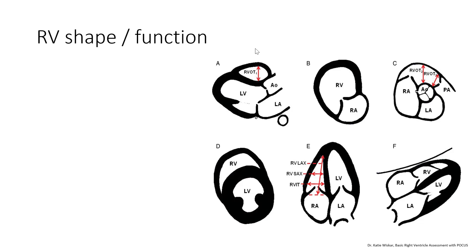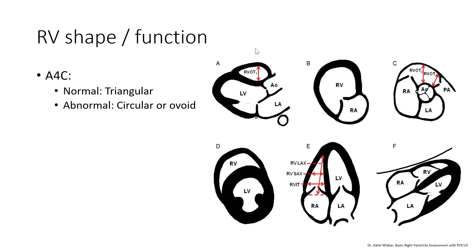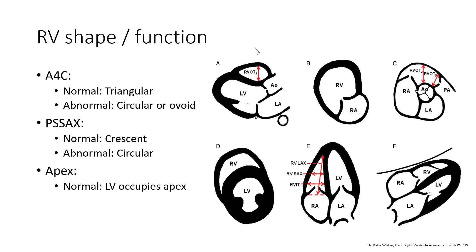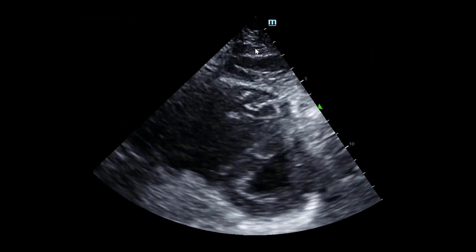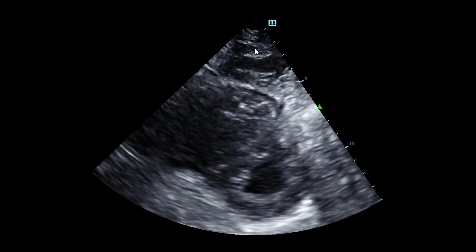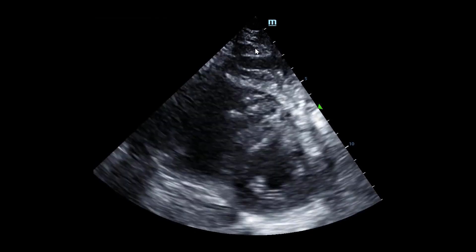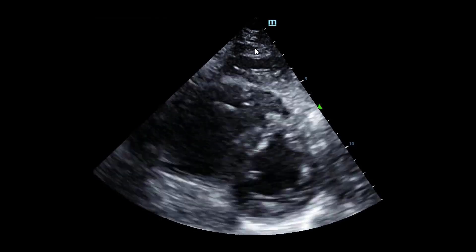RV shape and function is a second facet of assessment. From the apical four-chamber perspective, a normal RV should be triangular in shape; an abnormal RV may look circular or ovoid, as we saw in our case. The parasternal short axis should show a crescentic RV, whereas an abnormal RV would look more circular. The apex of the heart should generally be occupied mostly by the left ventricle; an abnormal apex would have more of the RV taking it over — certainly the case in our apical four-chamber view. In the parasternal short axis for our patient, we see evidence of interventricular septal bowing and a more circular shape of the right ventricle rather than the expected crescent.